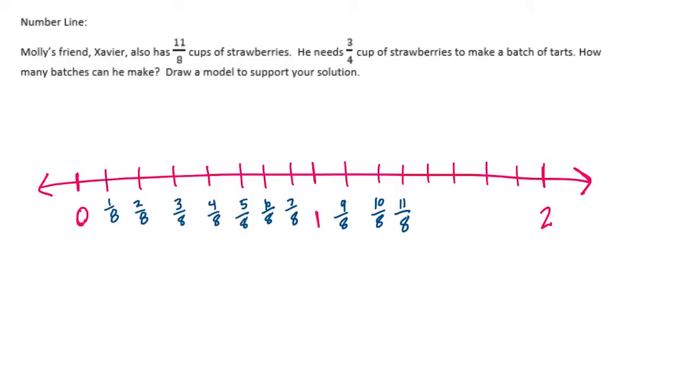And we need to split it into 3 fourths cup of strawberries. Now this doesn't have a common denominator, but I'm going to take 3 fourths and make it into eighths. If I do that, 3 times 2 is 6. We're going to split it into groups of 6 eighths. So I'll start. There's one group of 6 eighths. And then if I do another 1, 2, 3, 4, 5, 6.